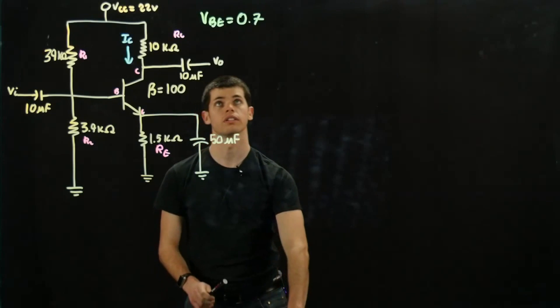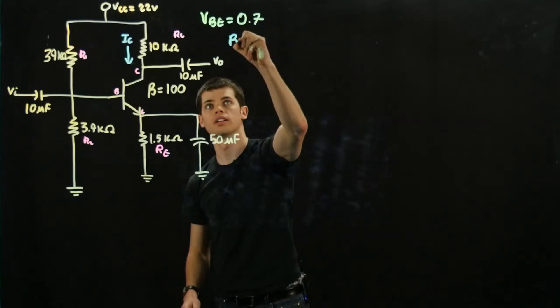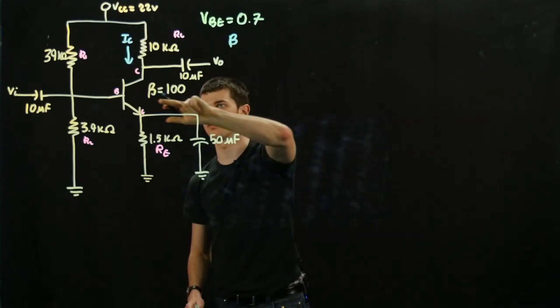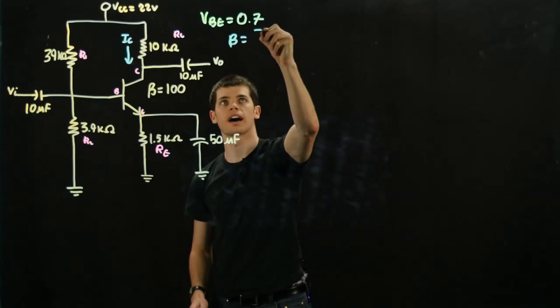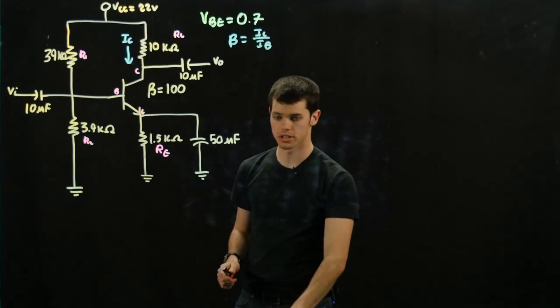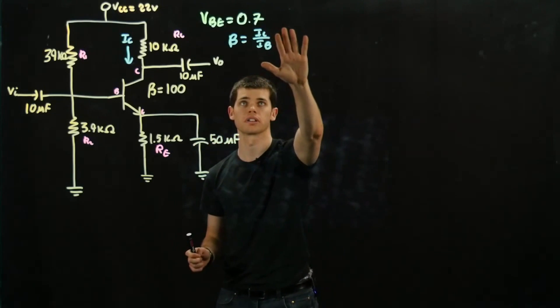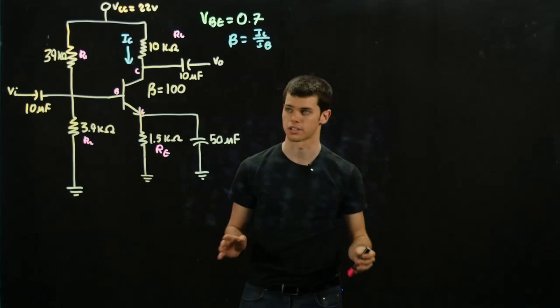And then just one more important thing is that this beta value over here is equal to IC over IB. There is technically a different form where there are ones involved, but since the difference in value is so minute, we can essentially just treat it as the ratio of these two and we'll still get the same values.